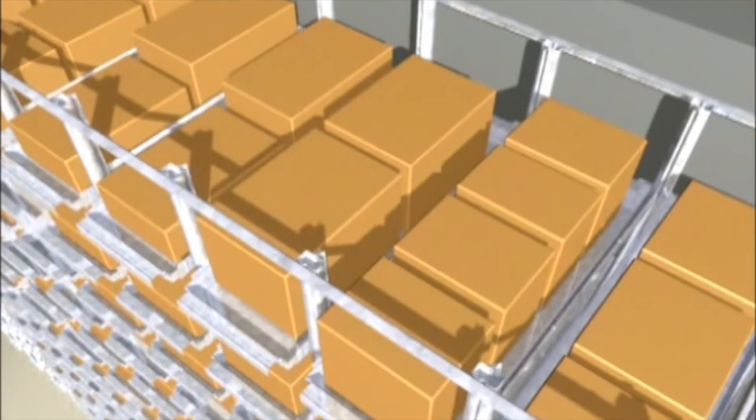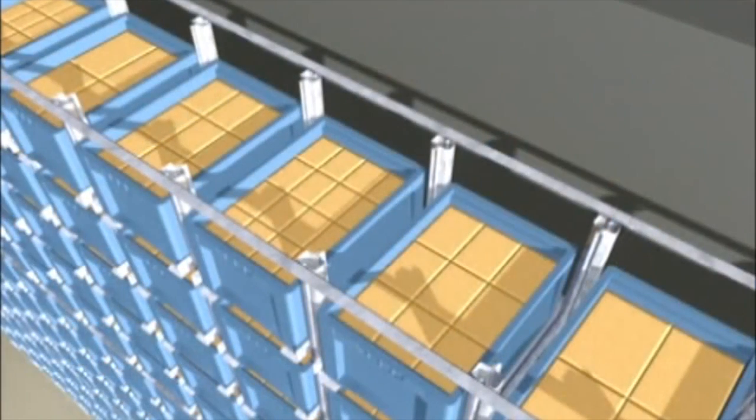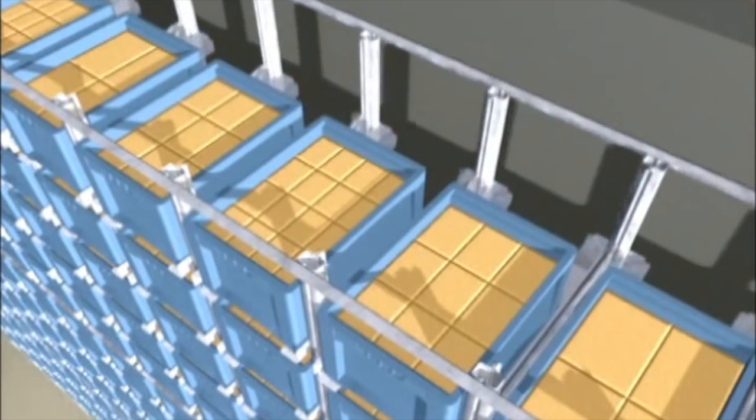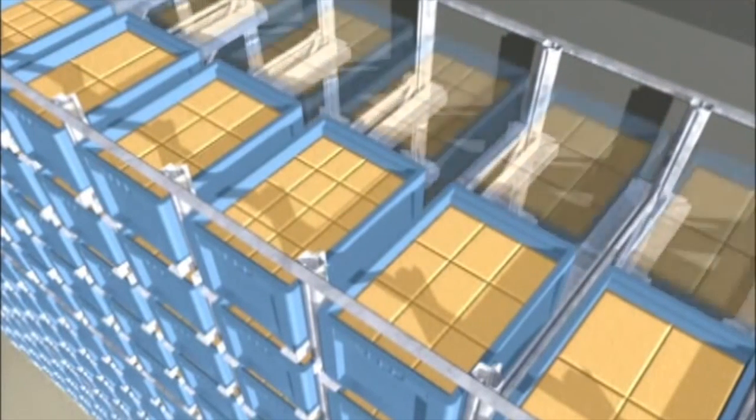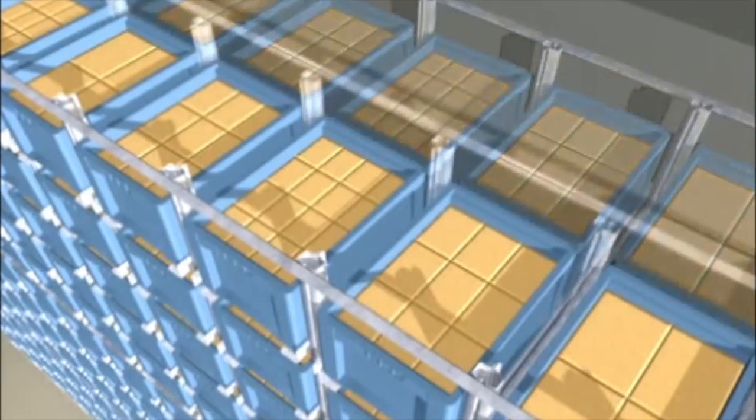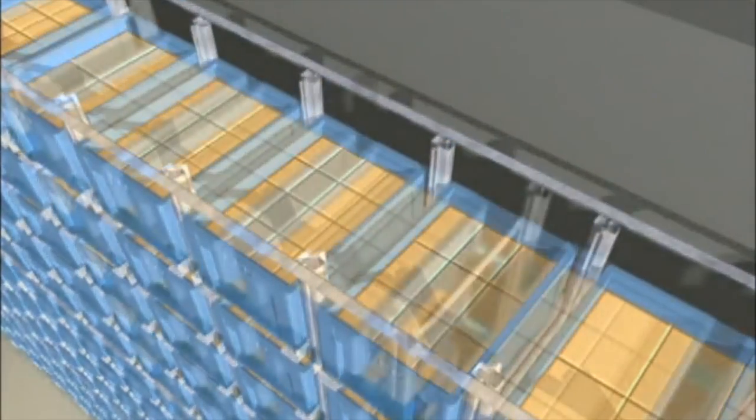Depending on the goods to be stored and the stacker crane model, an automated bin storage installation can be designed for single or double deep storage, single position storage or multi-position storage.